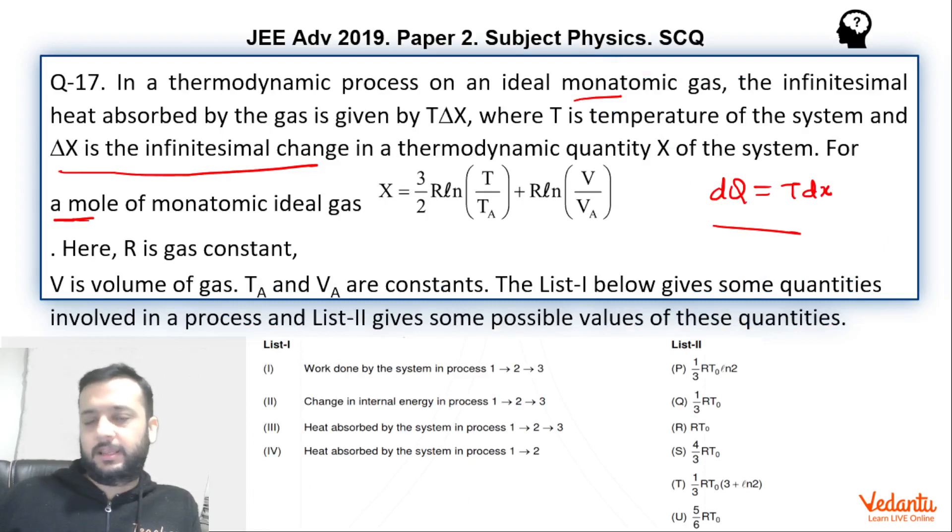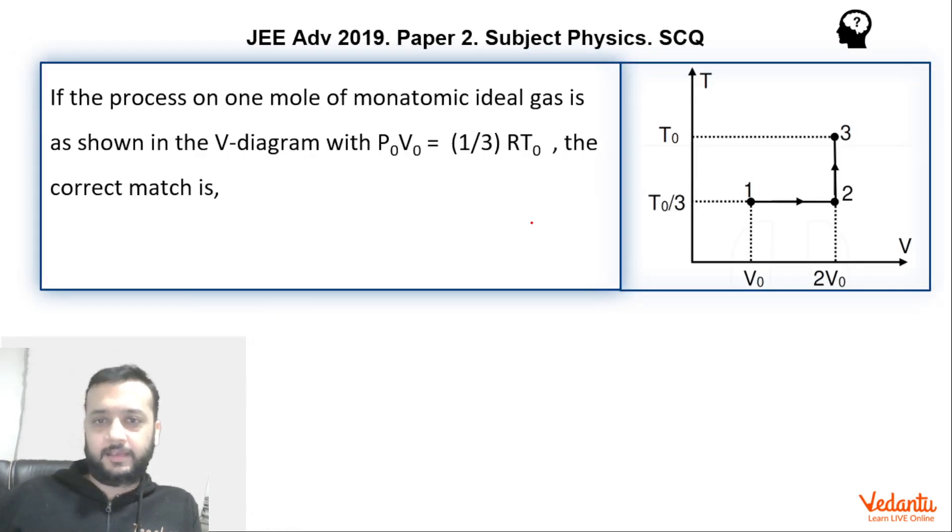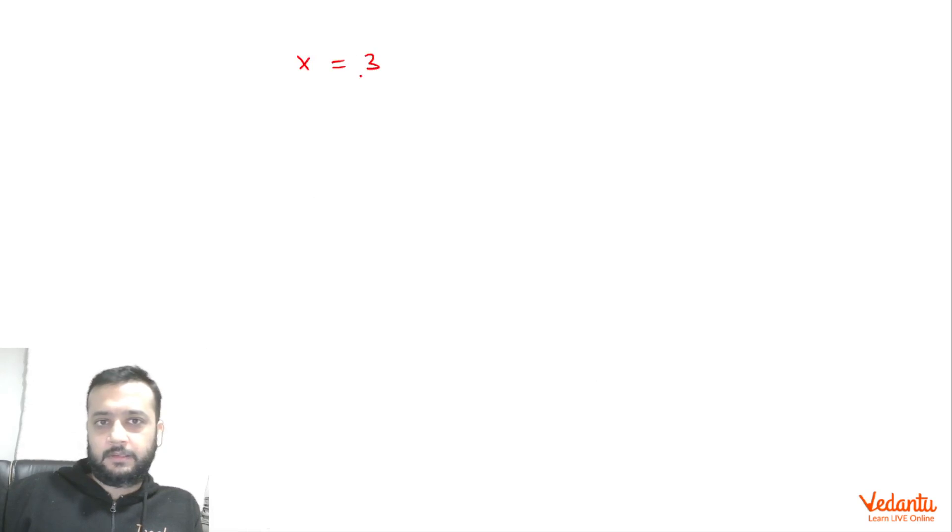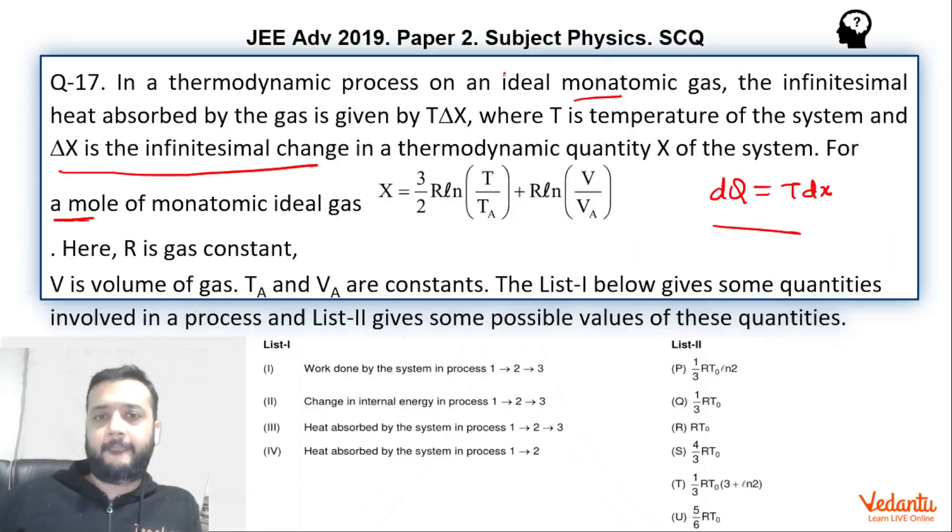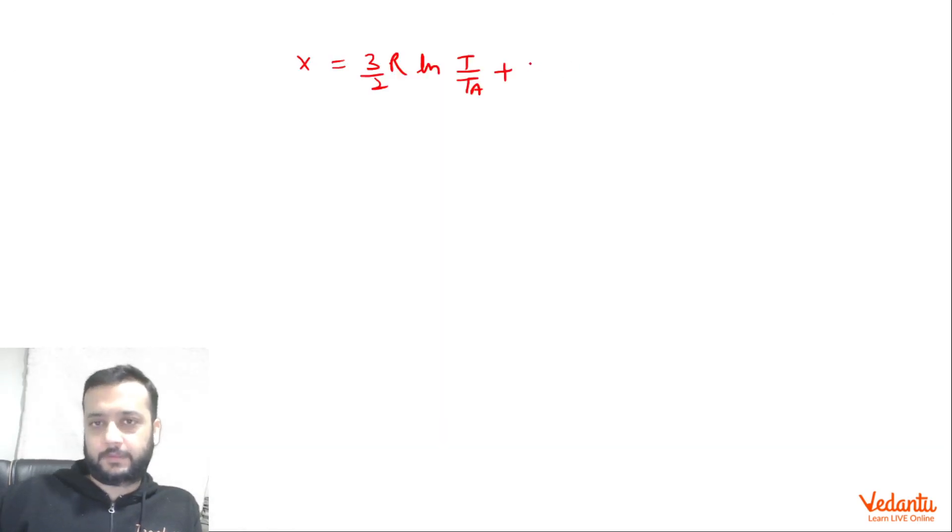So what is that equation? X = 3/2 R ln(T/Ta) + R ln(V/Va). Now it is also given that dQ is nothing but T dX. If you differentiate this, so what is dX? dX will be 3/2 R, ln will become Ta/T into differentiation of this. This will be dT/Ta.